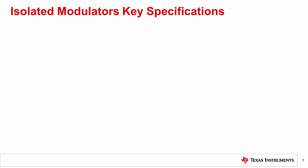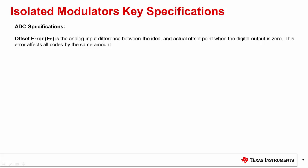When choosing an isolated modulator, several specifications have to be considered. Let's start with defining input offset error. A differential input signal of zero volts ideally produces a stream of ones and zeros that are high 50% of the time and low 50% of the time. Offset error is the analog input difference between the ideal and the actual offset point when the digital output is zero. This error affects all codes by the same amount. Keep in mind that the offset error is dependent on changes over temperature, which is quantified by offset error drift.